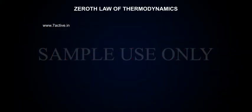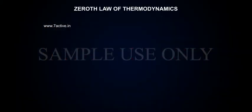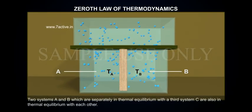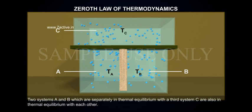Zeroth law of thermodynamics. Two systems A and B which are separately in thermal equilibrium with a third system C are also in thermal equilibrium with each other.